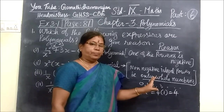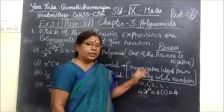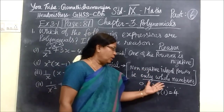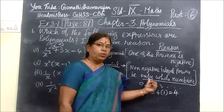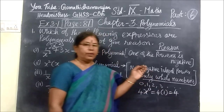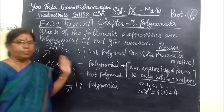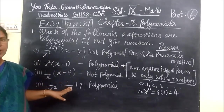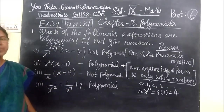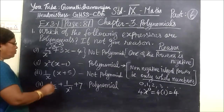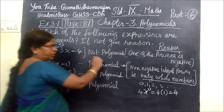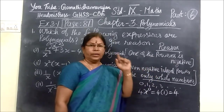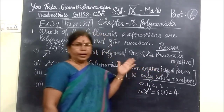The power should be non-negative, that is positive, meaning only a whole number — 0, 1, 2, 3, etc. If the power is negative, it is not a polynomial. Simply remember the concept: negative power means it is not a polynomial; positive power means it is a polynomial. Here, one of the powers is negative, so it is not a polynomial.